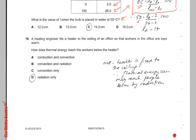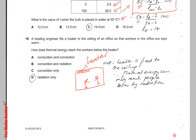A heating engineer fits a heater to the ceiling of an office so that workers in the office are kept warm. I'm just drawing a picture here to show you the heater and the workers below. How does thermal energy reach the workers below the heater? The correct response is D — radiation only.